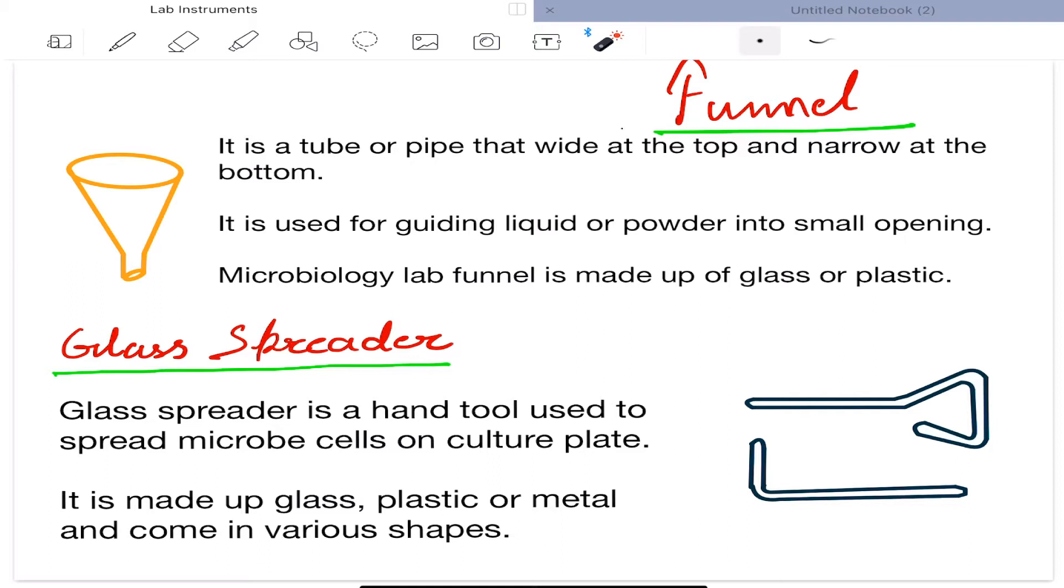Microbiology lab funnel is made up of glass or plastic. Next is glass spreader. Glass spreader is a hand tool used to spread microbe cells on culture plate. It is made up of glass, plastic, or metal and comes in various shapes.